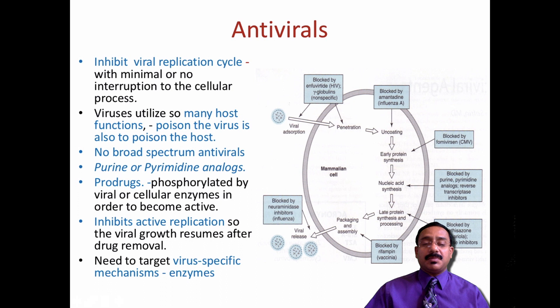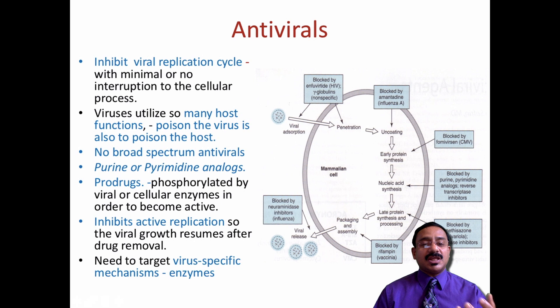There are two important analogues being used: purine and pyrimidine analogues. These analogues resemble adenine, guanine, thymine, and cytosine. They weave in and replace the original bases in the viral DNA.